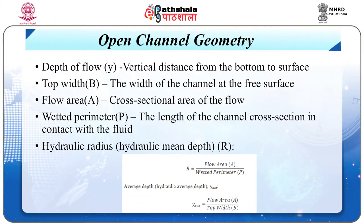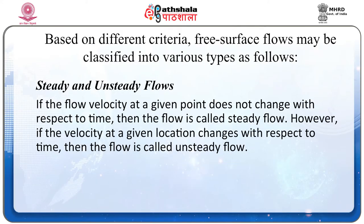To summarize open channel geometry variables: depth of flow Y is the vertical distance from the bottom to the surface; top width B is the width of the channel at the free surface; flow area A is the cross-sectional area of the flow; and wetted perimeter P is the length of the channel cross section in contact with the fluid.